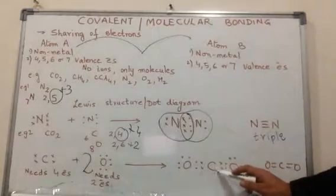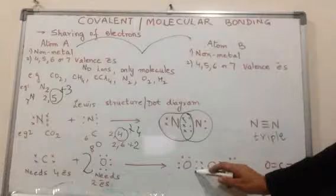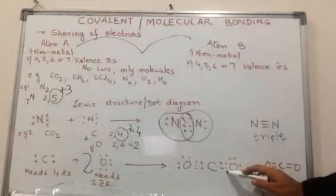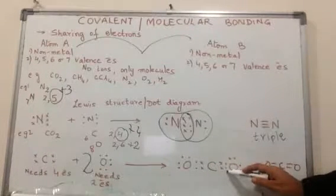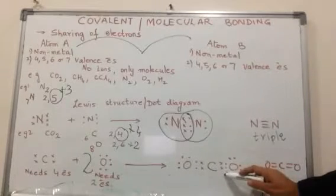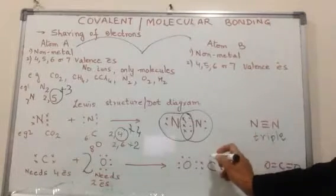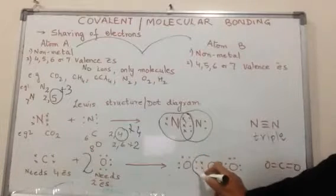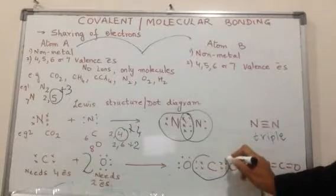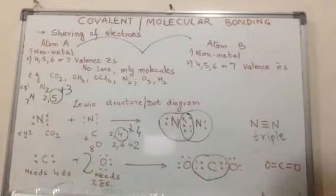Carbon takes up two electrons from the first oxygen atom and shares two electrons with the second oxygen atom. It had four of its own. Carbon now effectively has eight electrons in its valence shell.